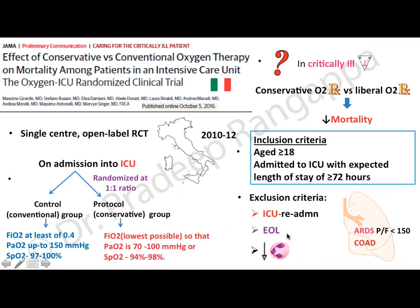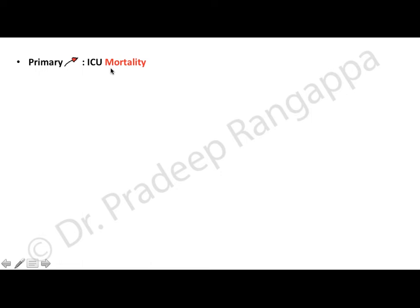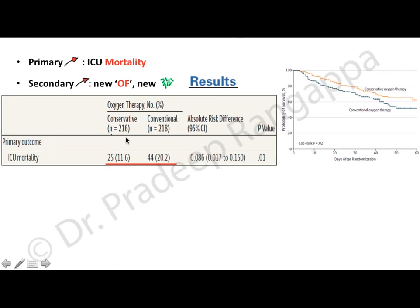The results were very striking. ICU mortality was lower in the conservative group compared to the conventional liberal group, and this was statistically significant. The Kaplan-Meier survival curve showed survival was much lower in the liberal oxygen group. New organ failures were also more in the liberal oxygen group. Shock occurred in 10.6 percent of liberal oxygen patients versus 3.7 percent in the conservative group, statistically significant.